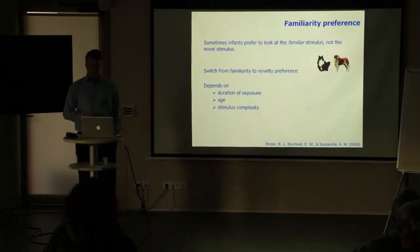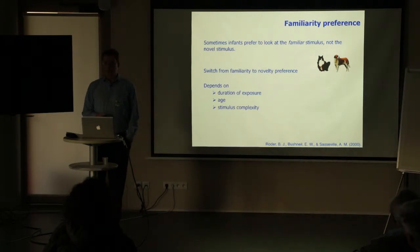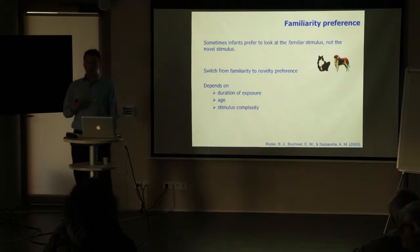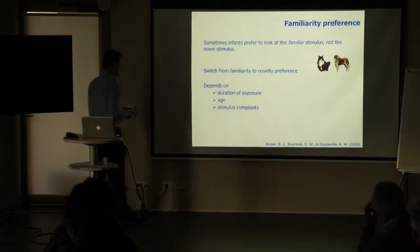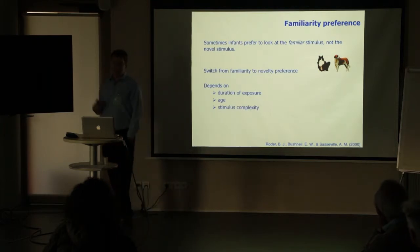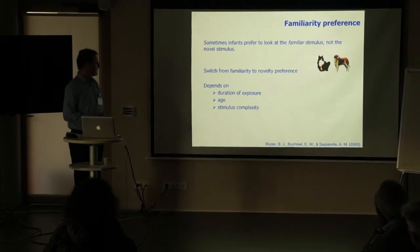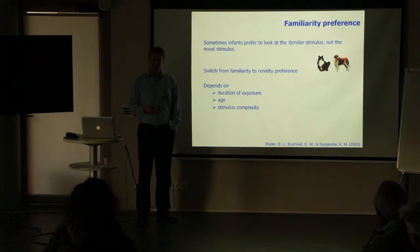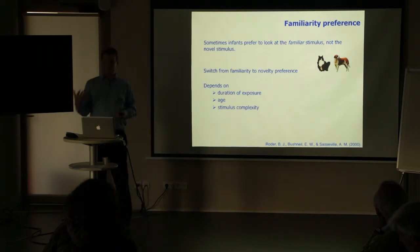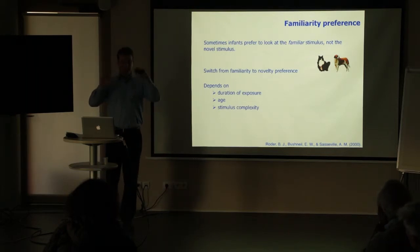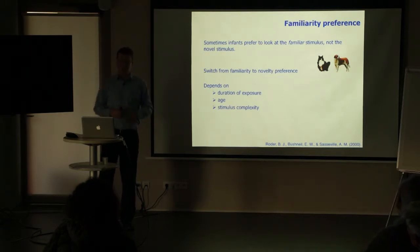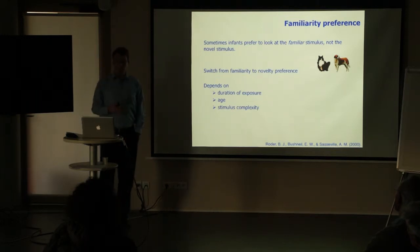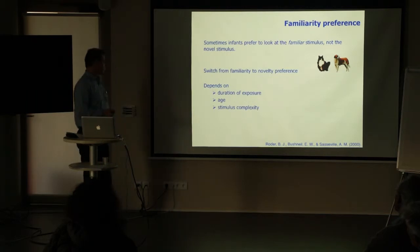Infants sometimes also show a familiarity preference rather than a novelty preference. For complex stimuli where infants haven't been habituated for a long time, they tend to show a familiarity preference. You can observe a switch from preference for the familiar stimulus to the novel one — for example, when one stimulus always stays the same and another always changes, infants initially orient to the familiar stimulus and then, often from one trial to the next, switch to the novel one. This switchover depends on age and stimulus complexity.